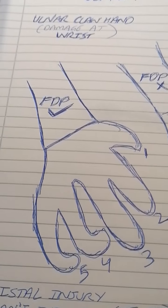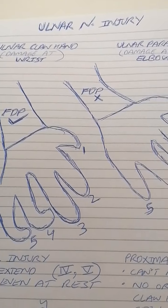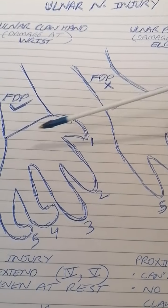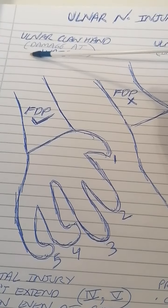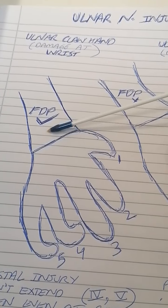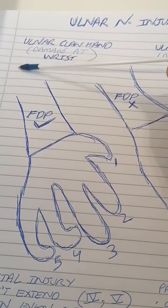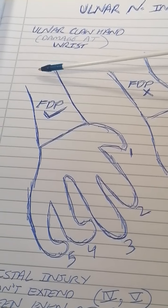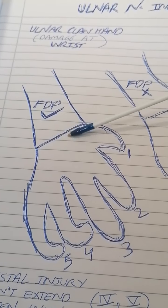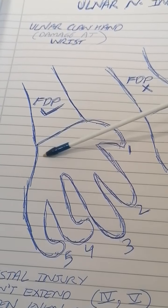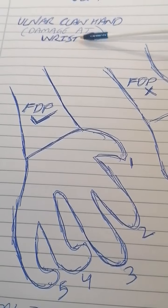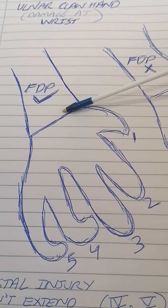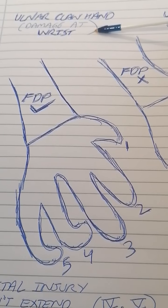Ulnar nerve injury can happen at two levels: at the wrist (more distal) or at the elbow (more proximal). Let's talk about the distal injury first — at the wrist. Damage to the ulnar nerve at the wrist level will cause ulnar claw hand.